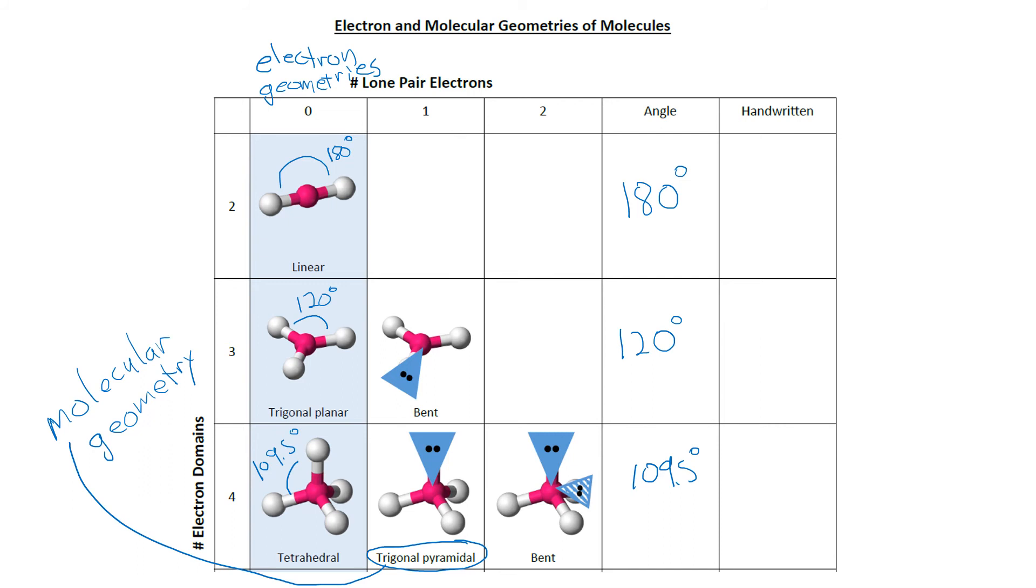If we're going to represent these on paper with our conventions for how we draw the different types of lines, for the linear case you could draw your central atom, which I'll just generically label A, and then the two outside atoms are Xs, and they're just all three in a line. In the case of the trigonal planar structure, we have our central atom and then the bonds point towards the corners of an equilateral triangle, and they're all in the same plane so we use just regular lines for those.